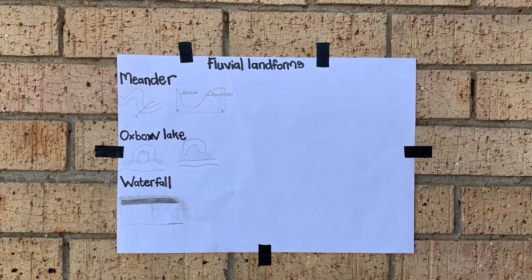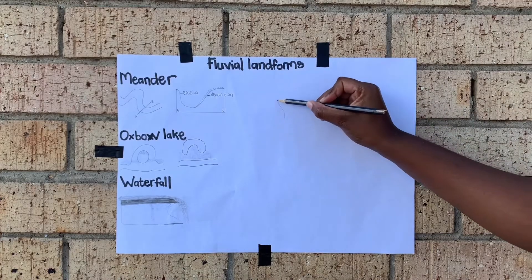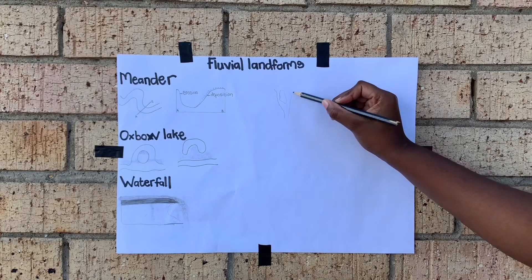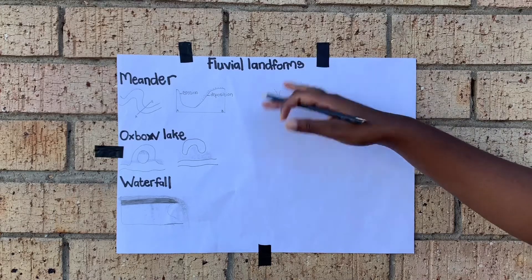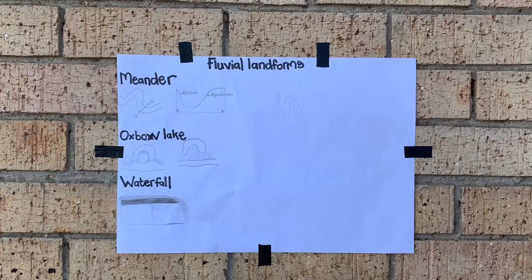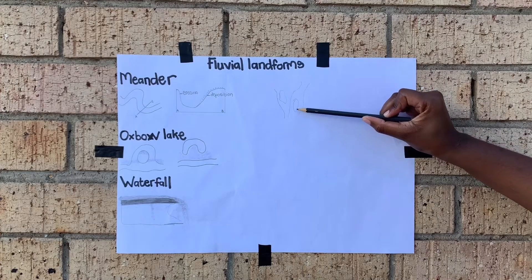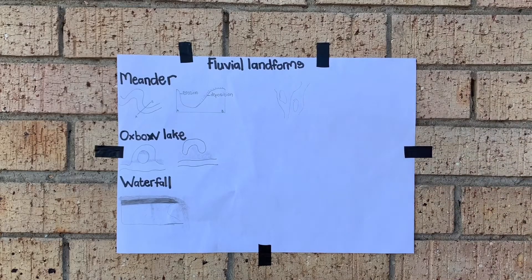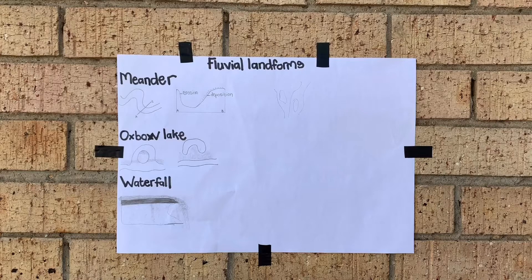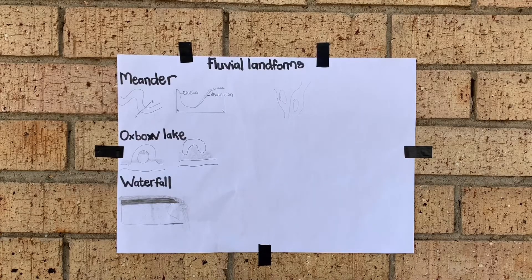We also have a braided stream. A braided stream is when a river splits into two or more smaller streams as a result of deposition — sand is deposited and splits the river into more streams. Another one is a delta, which happens at the mouth of a river where there is a lot of deposition. Those are the most important landforms I've covered.